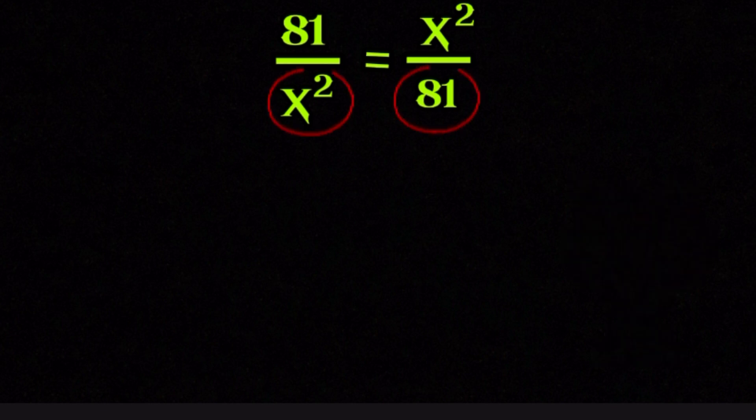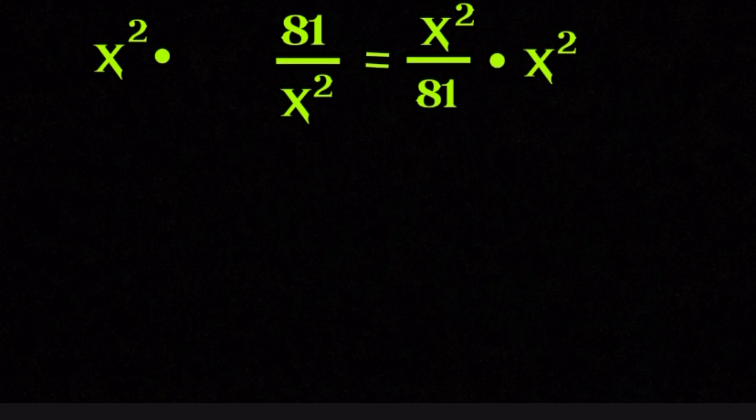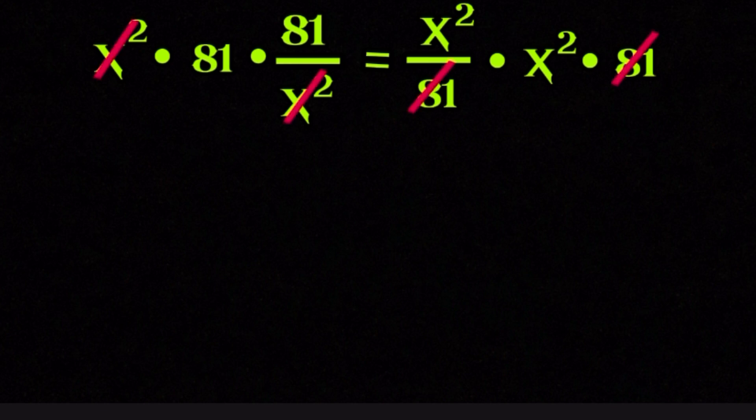We want to get rid of the denominators, so the equation becomes easy to work with. And to do that, we multiply both sides of the equation by x squared, and also by 81. This way, nothing is broken and nothing has changed. We are simply clearing the fractions.